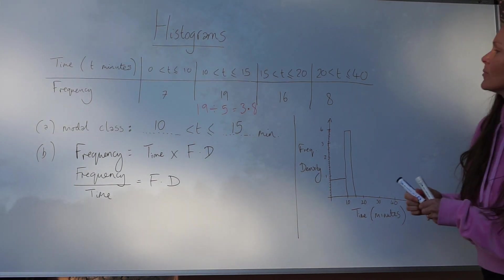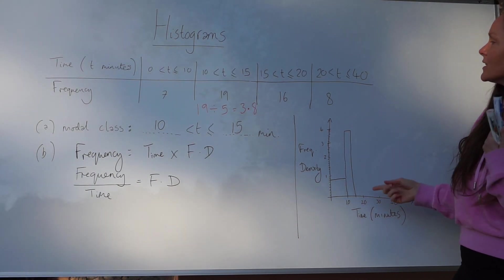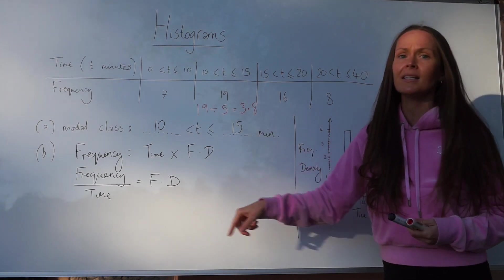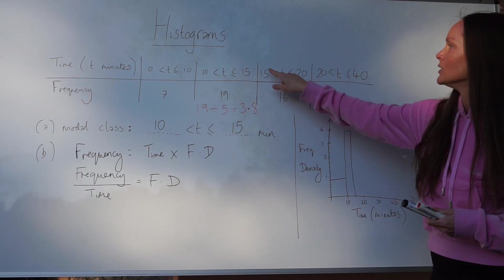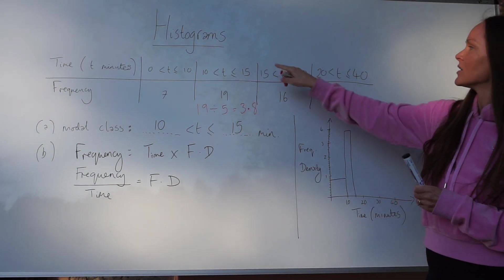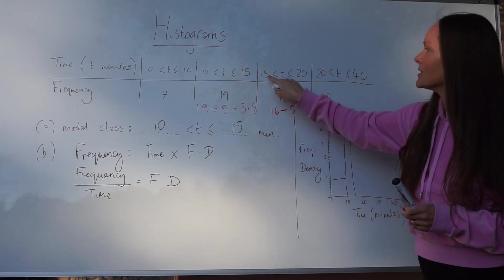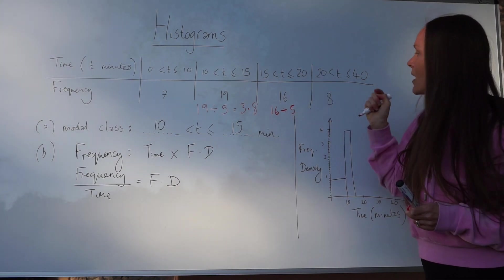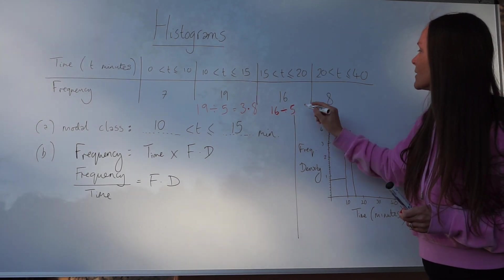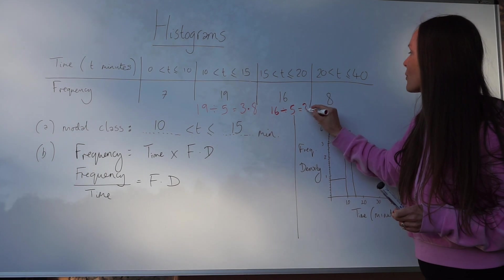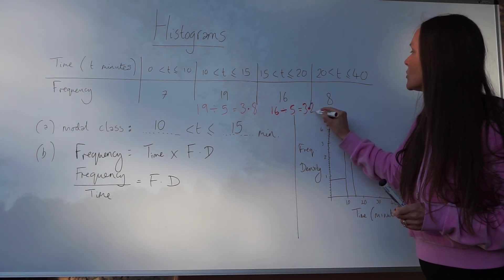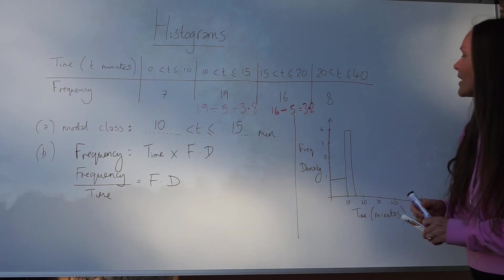Now let's look at the second part. Remember to work out the height of the bar, the frequency density, you take the frequency and you divide by time or the class width. So 16 divided by 5 again, because the difference between these numbers is 5. 16 divided by 5 is 3.2. So there's the new height.